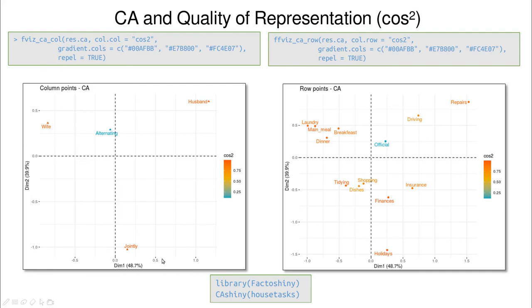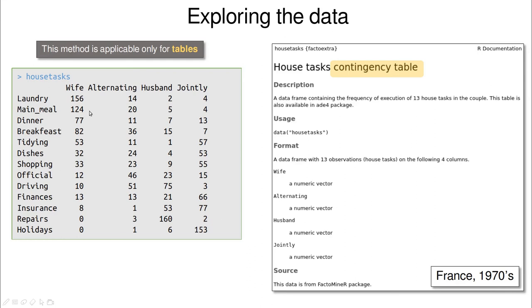And you can do this interactively using Factor Shiny. So you just have to call Correspondence Analysis Shiny House Tasks. And then you're going to play a little bit with clicking here and there to reproduce this analysis. So in summary, if you have a table with integer numbers counting the coincidences between the two entries of the table, then Correspondence Analysis is your friend.